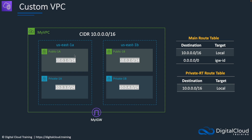In each of the availability zones we're going to have one public subnet and one private subnet. So they each have a name: public 1A, private 1A, public 1B, and private 1B. That naming is descriptive and helps us understand what availability zone the subnet is in. Each subnet has its own CIDR block. There will be two route tables — the main route table, which will have a route to an internet gateway so our public subnets can access the internet.